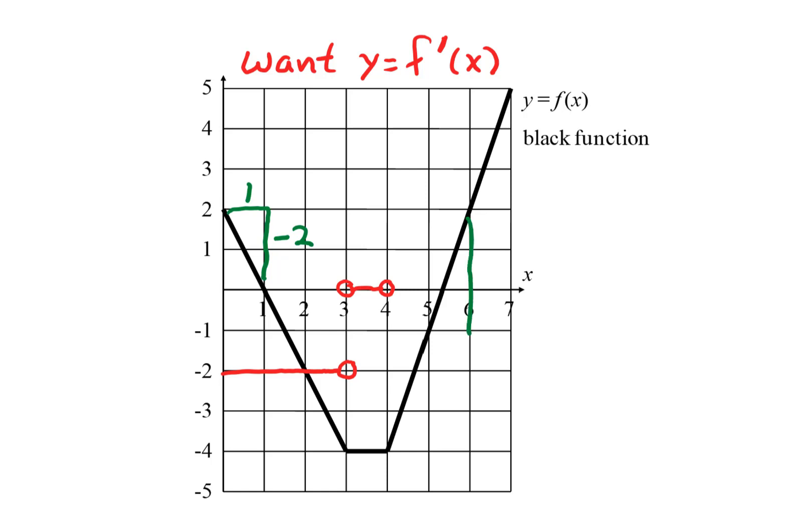To the right of x equals 4, the function f slopes upward 3 units for every one unit it goes across, so the slope is positive 3. This gives us the graph of the derivative. Notice that there is only one possible derivative for our function. The derivative is unique.